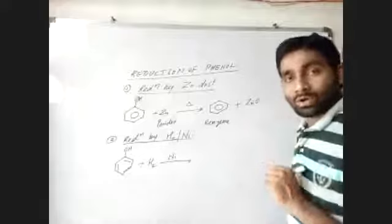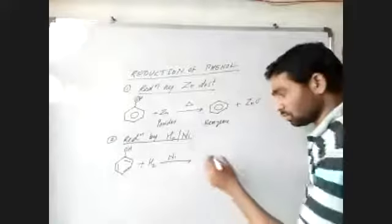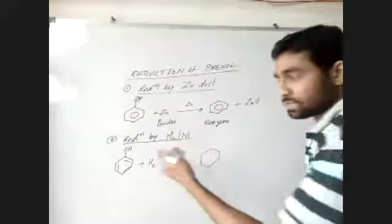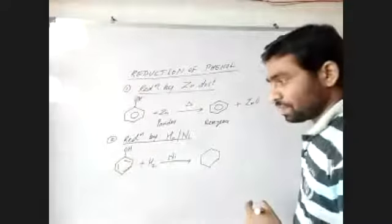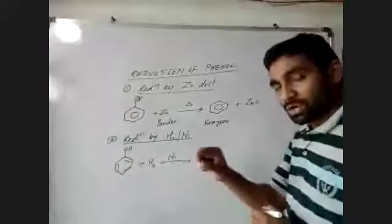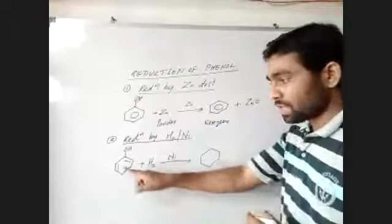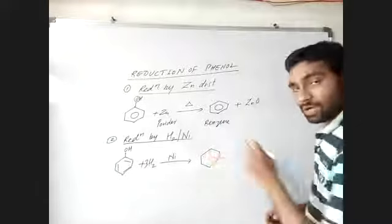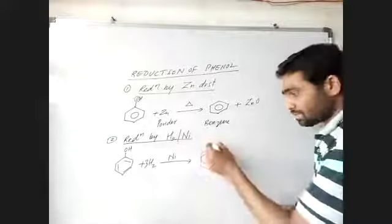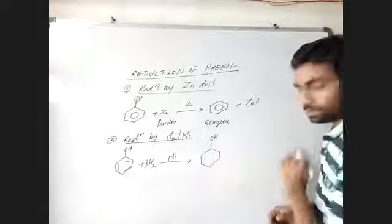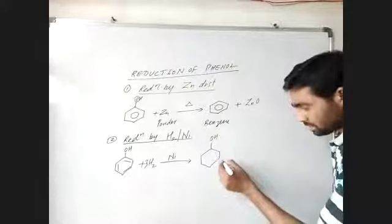This hydrogen gas only reduces double bonds. The hydrogen gas will add to the benzene ring — one double bond equals two hydrogen atoms. There are three double bonds, so we write 3H₂. The hydrogen gas adds to the benzene ring and we get cyclohexanol.